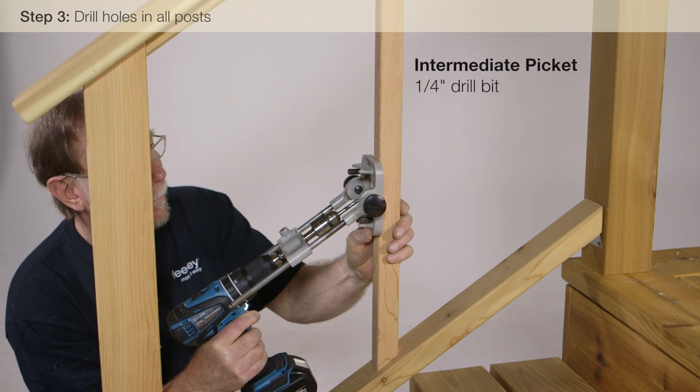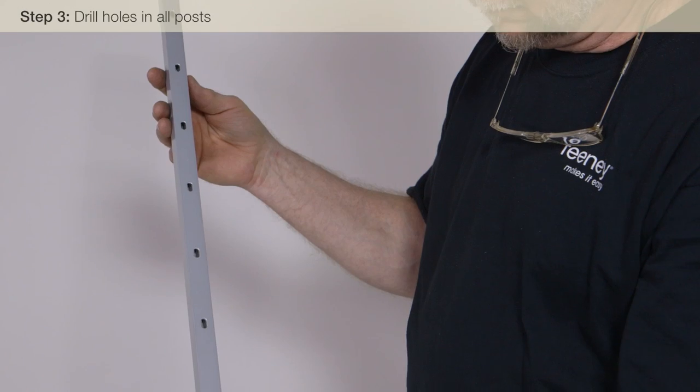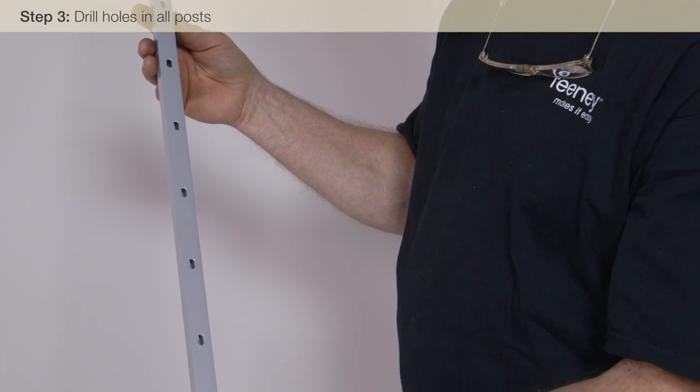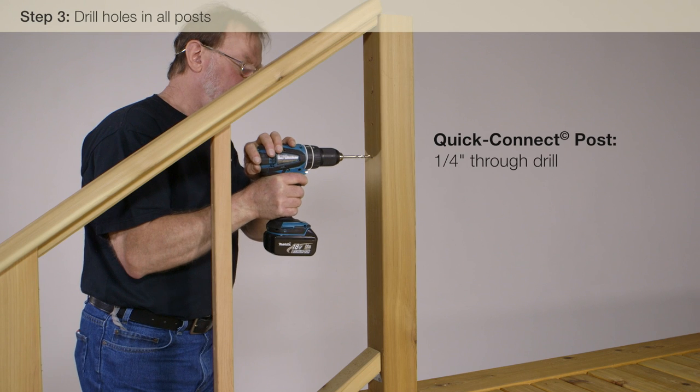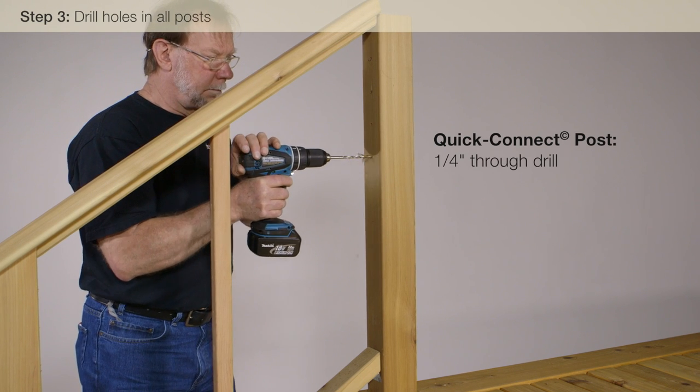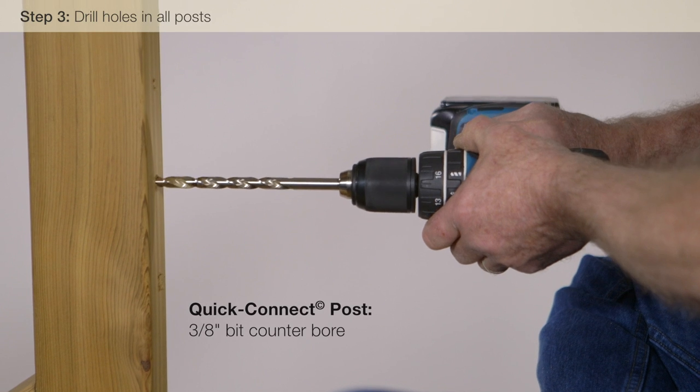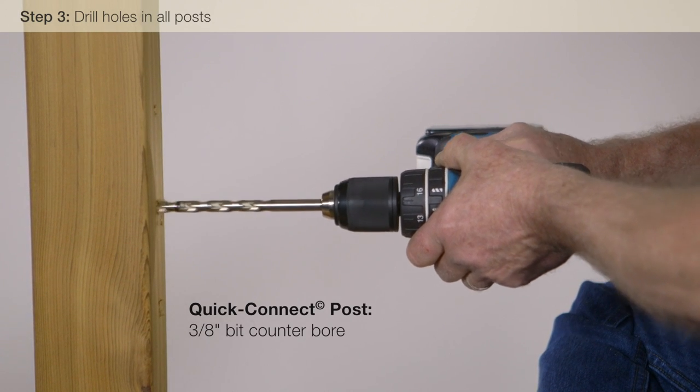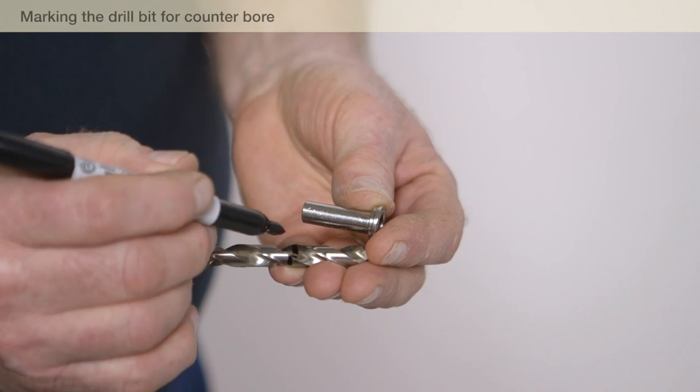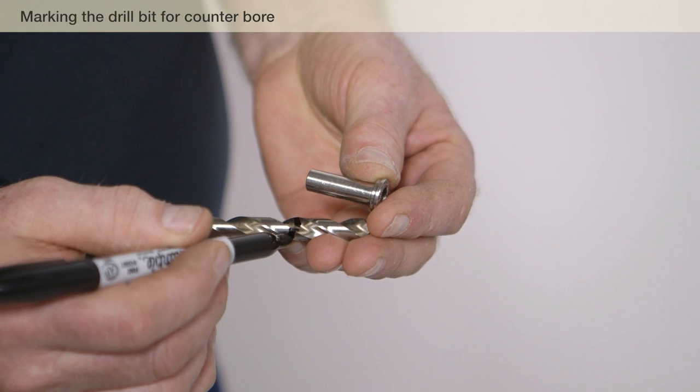Next, we drill 1/4 inch holes in the intermediate picket. You may also use one of our pre-drilled intermediate pickets as an alternative to the wood picket. At the quick connect post, first we through drill the post from the inside with a 1/4 inch drill bit. Then we counterbore with a 3/8 inch drill bit to the depth of the fitting. You can mark the length of the quick connect fitting on the bit before drilling counterbore holes.